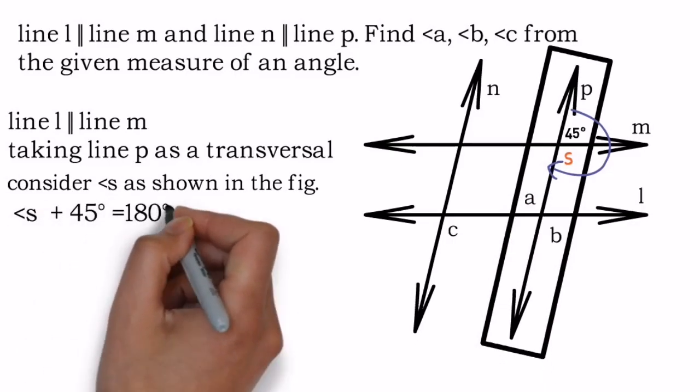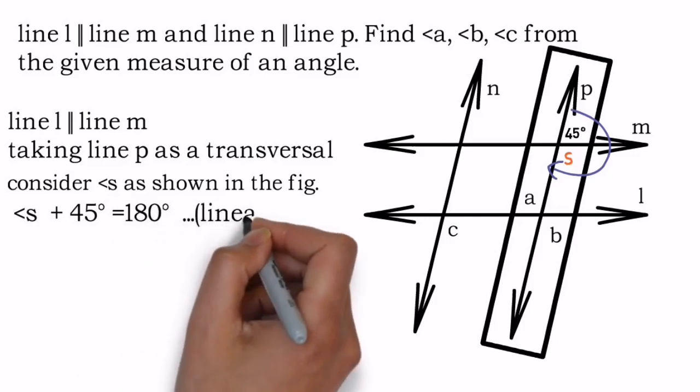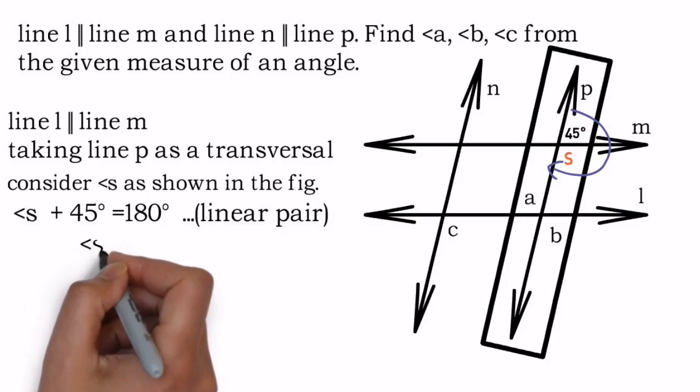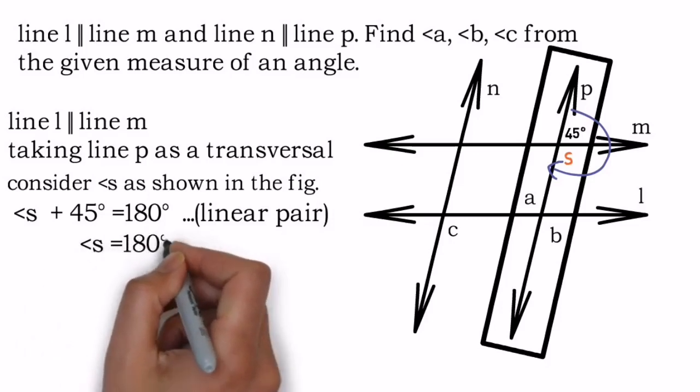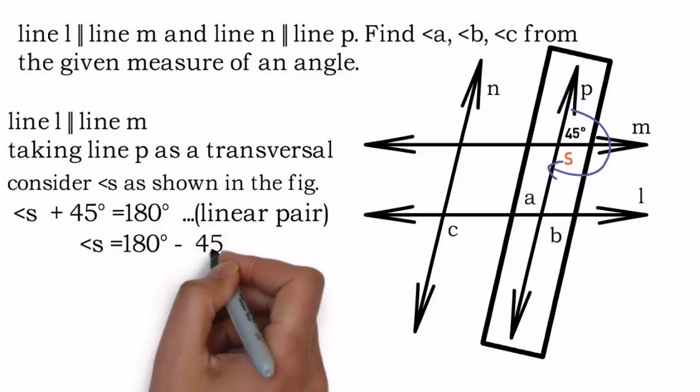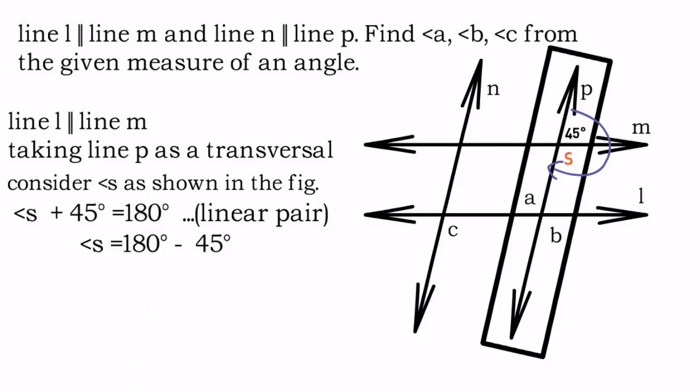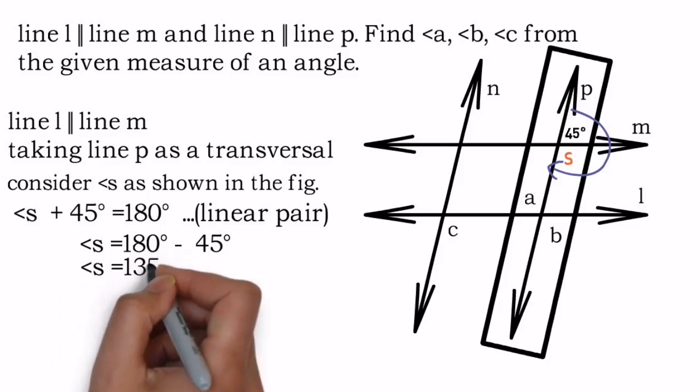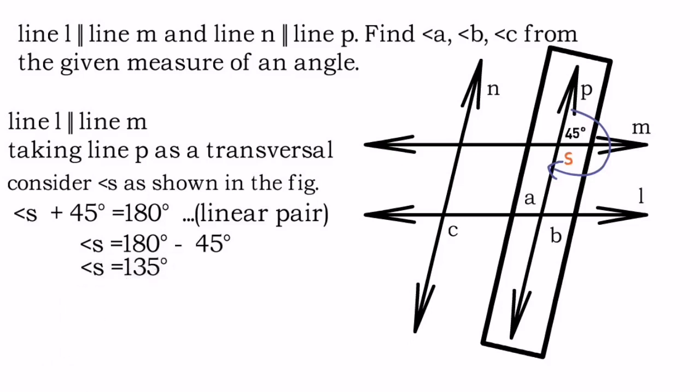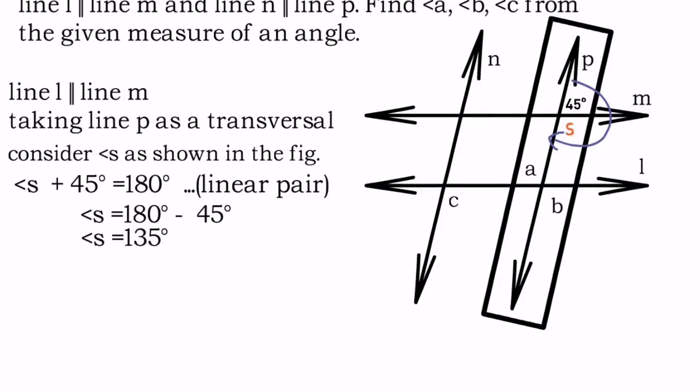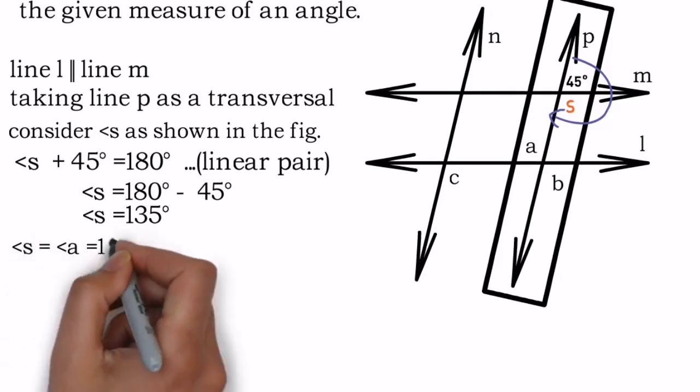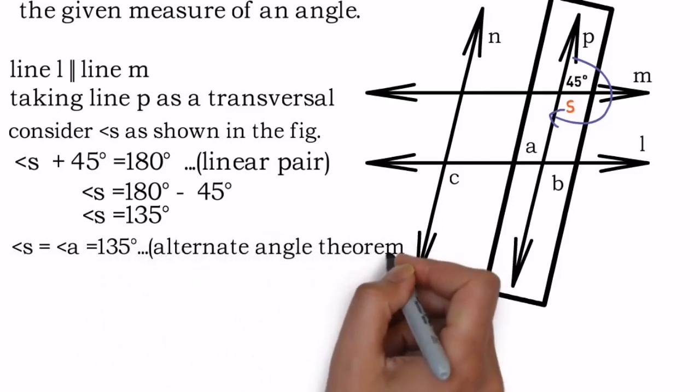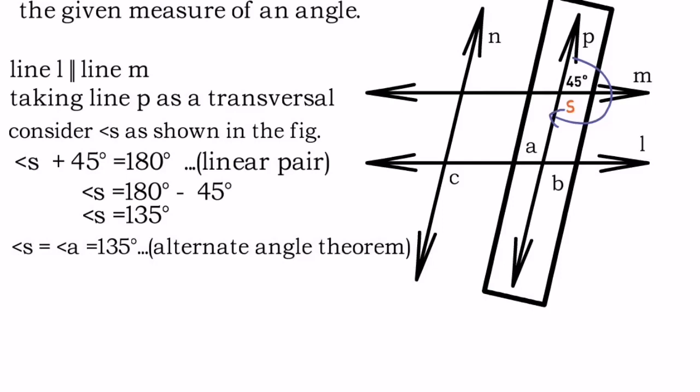Let's begin. Angle 45 and angle s is a linear pair, so angle s plus 45 degrees equals 180 degrees. With simple mathematics, angle s equals 180 minus 45, which results in 135 degrees. As we have found angle s equals 135 degrees, I can say angle s and angle a are equal because of the alternate angle theorem, so angle a also equals 135 degrees.